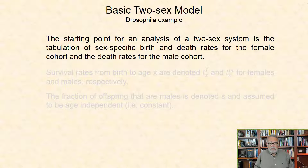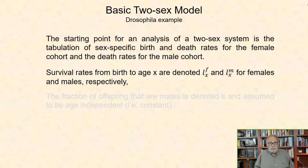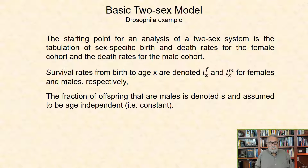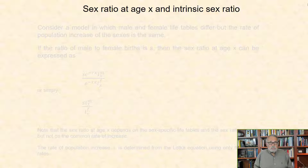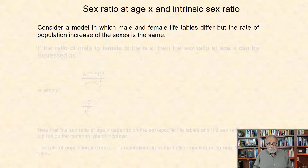Basic two-sex parameters. The starting point for an analysis of a two-sex system is the tabulation of sex-specific birth and death rates for the female cohort and the death rates for the male cohort. Survival rates from birth to age X are denoted LX female and LX male, and the fraction of offspring that are males is denoted S, and assumed to be age-independent, that is, constant.